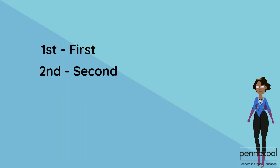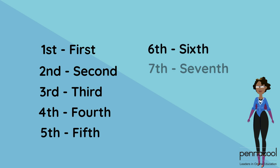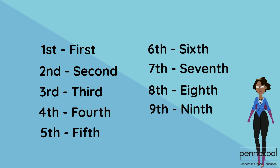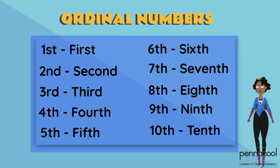So 1st, 2nd, 3rd, 4th, 5th, 6th, 7th, 8th, 9th, or even 10th — these are all examples of ordinal numbers.